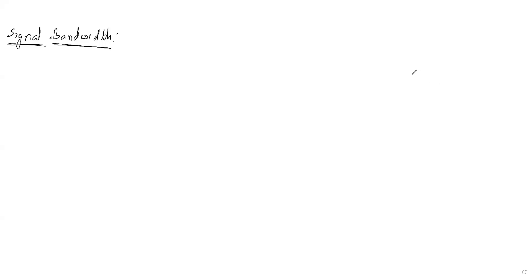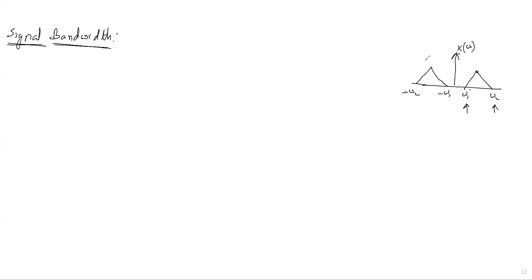Another thing you should remember: in the frequency domain, if you see the Fourier transform, we always write it on both left and right sides. Suppose this is a response of a signal in the frequency domain — omega one, omega two, minus omega one, minus omega two. The lowest frequency present in the signal is here, the highest is here. But to calculate signal bandwidth or system bandwidth, we take only the positive side, because in practical scenarios we don't deal with negative frequency — there is nothing called negative frequency like minus 50 Hz or minus 100 Hz. That exists only for theoretical purposes due to the Fourier transform equation.